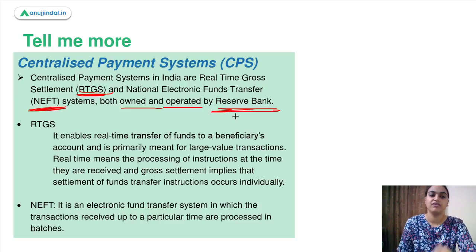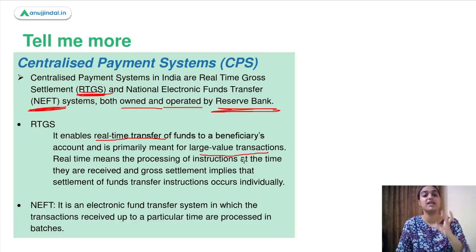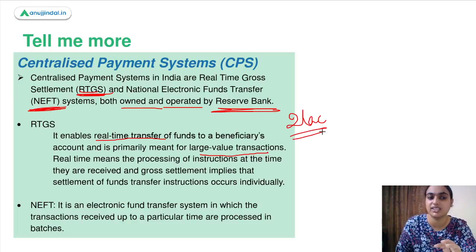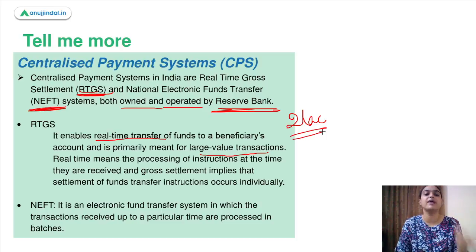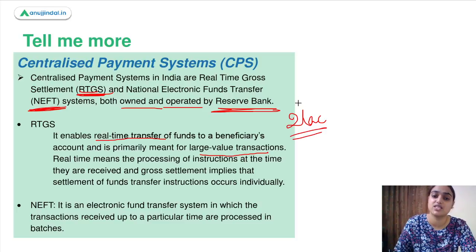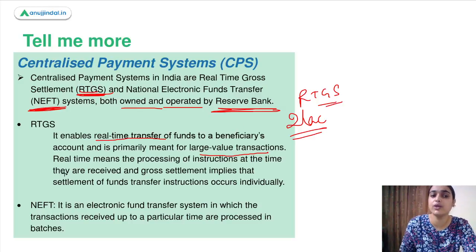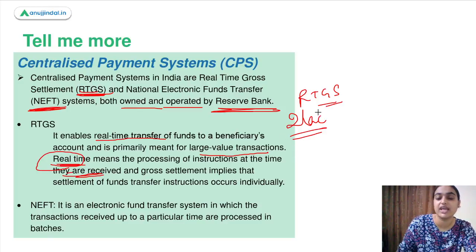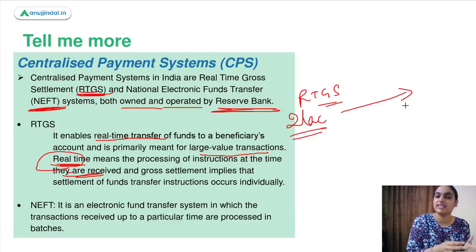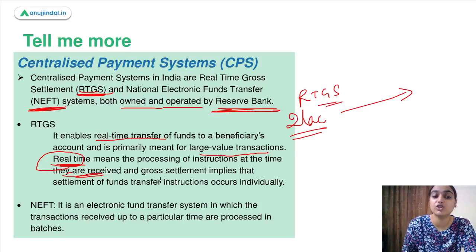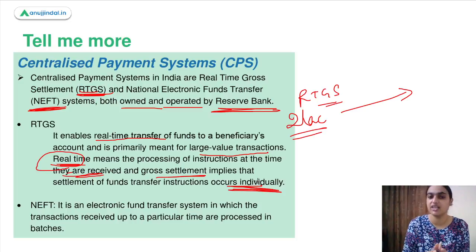RTGS is a real-time transfer of funds to the beneficiary account, primarily for large value transactions. The minimum requirement for an RTGS transaction is 2 lakh. It is called real-time because processing of instructions is done at the time they are received. It is called gross settlement because the settlement of fund transfer instructions occurs individually — transactions are not batched together; each individual transaction is processed individually.